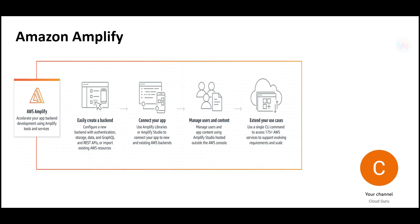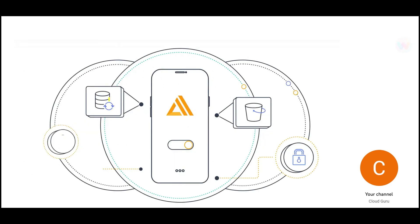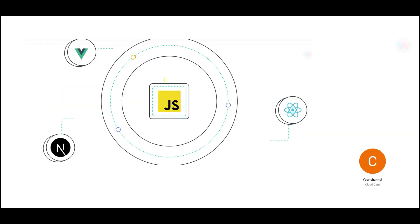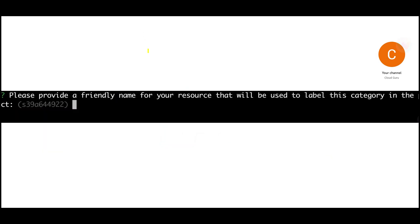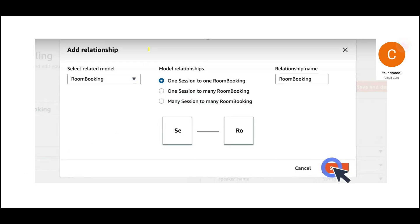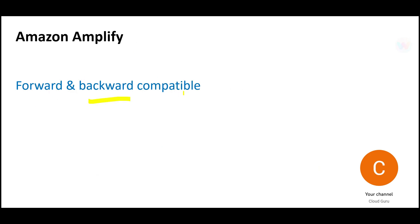Amplify integrates with a wide range of services — databases, S3 storage, security, and more. You can create mobile apps using Node.js. If you want to make changes, you can use the UI or the CLI. If you're not comfortable with code, you can use the GUI. Amplify is both forward and backward compatible.